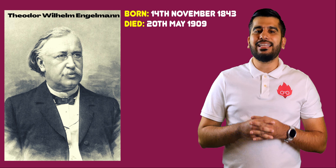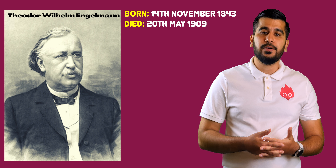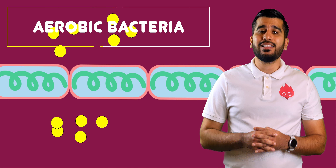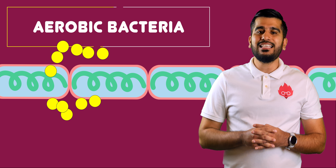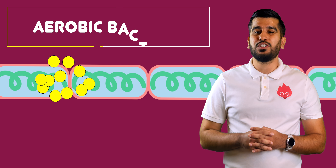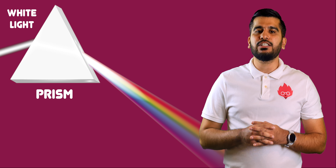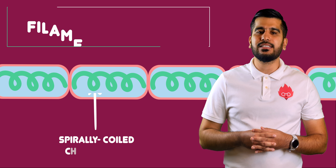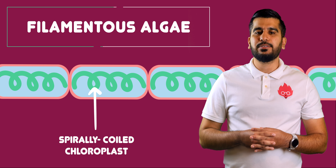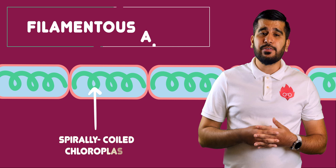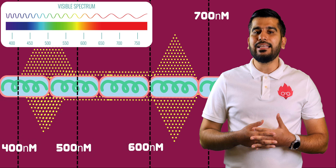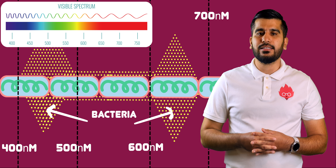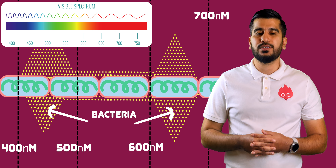Theodore Engelmann, in 1880, was the first person to compare the rate of photosynthesis with the wavelength of light. In his experiment, he used a species of aquatic aerobic bacteria. These bacteria would accumulate where oxygen was present. Engelmann split sunlight into its different colours using a prism, and shone this light onto filamentous algae, which are made up of rows of photosynthetic cells. The aquatic bacteria would accumulate around the filaments, mainly around areas where chloroplasts were receiving blue and red light, which showed the importance of this light for photosynthesis.